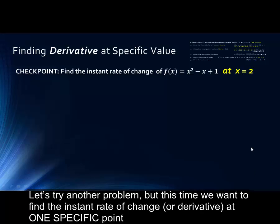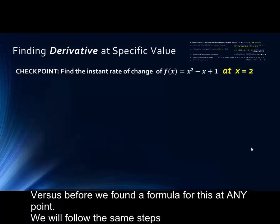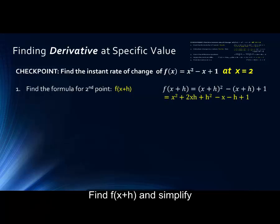Let's try another problem, but this time we want to find the instant rate of change, or derivative, at one specific point, versus before we found a formula for instant rate of change at any point. We'll follow the same steps. Let's find f of x plus h, and simplify.